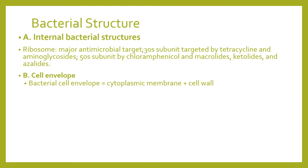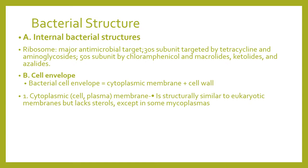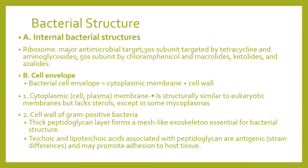For the bacterial envelope, the bacterial cell envelope is composed of the cytoplasmic membrane and the cell wall. The cytoplasmic membrane is structurally similar to that of eukaryotic cells but lacks sterols, except in some species of mycoplasma. The cell wall of gram-positive bacteria has a thick peptidoglycan layer that forms a mesh-like exoskeleton essential for bacterial structure. Teichoic and lipoteichoic acids associated with peptidoglycan are antigenic, forming the basis for strain differences and may promote adhesion to host cells.